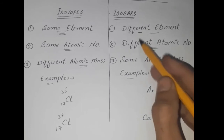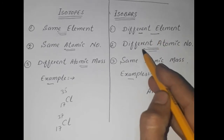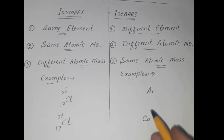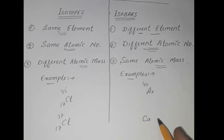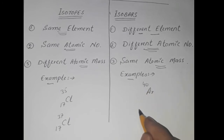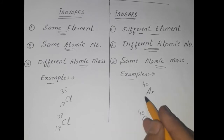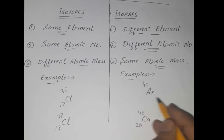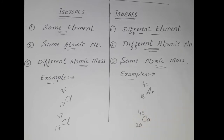For isobars, elements have different atomic numbers but the same atomic mass. For example, Argon and Calcium both have atomic mass 40. Calcium has atomic number 20 and Argon has atomic number 18. That is the difference between isotopes and isobars.